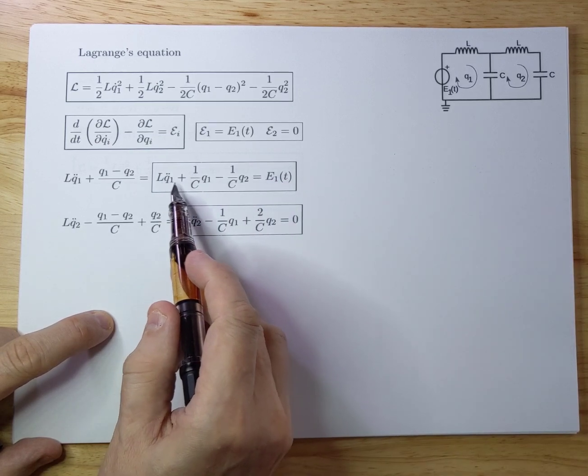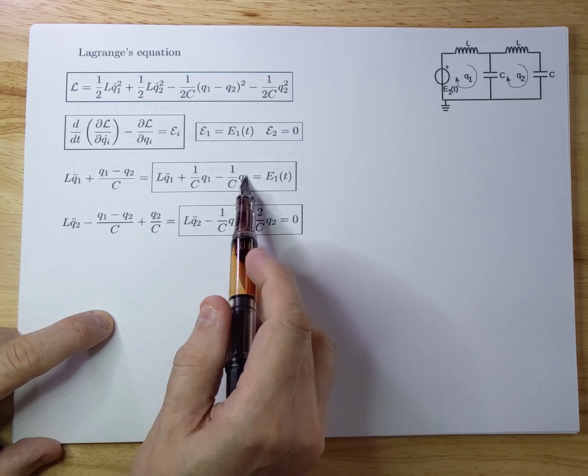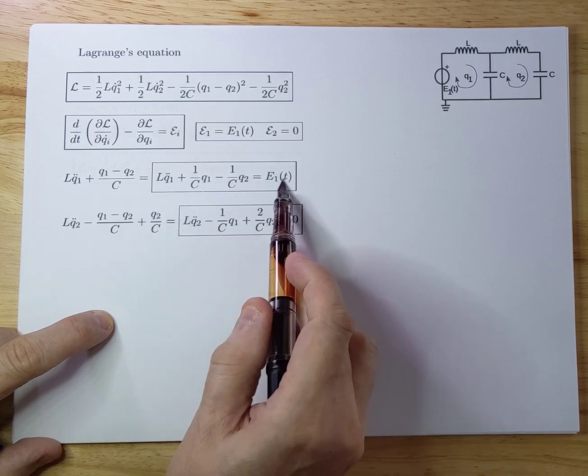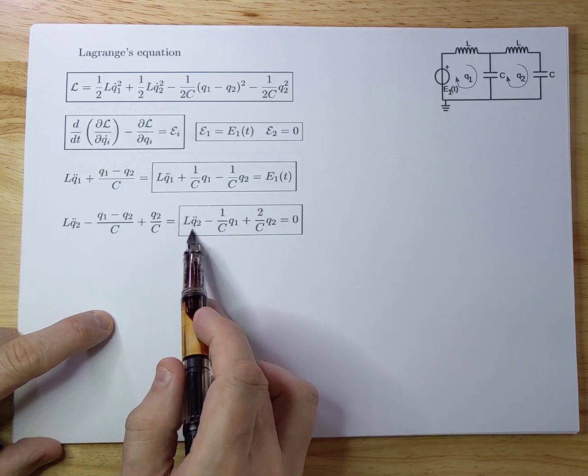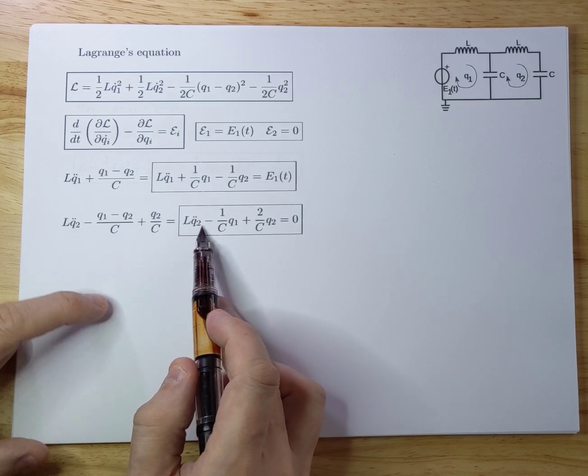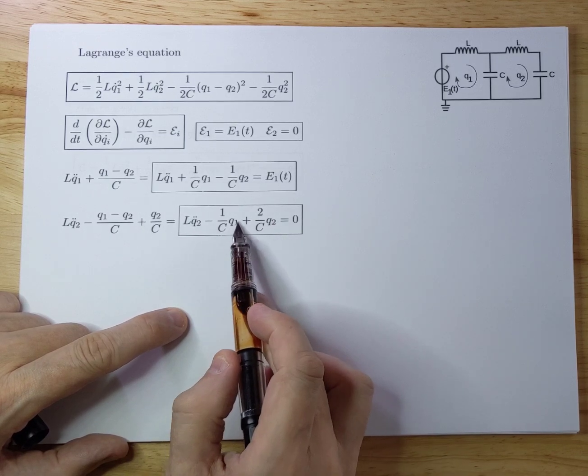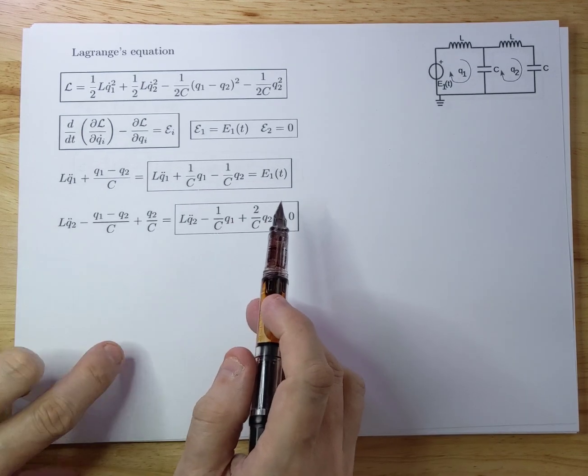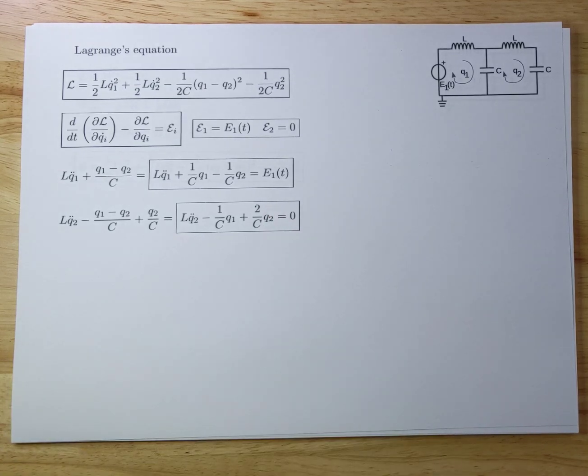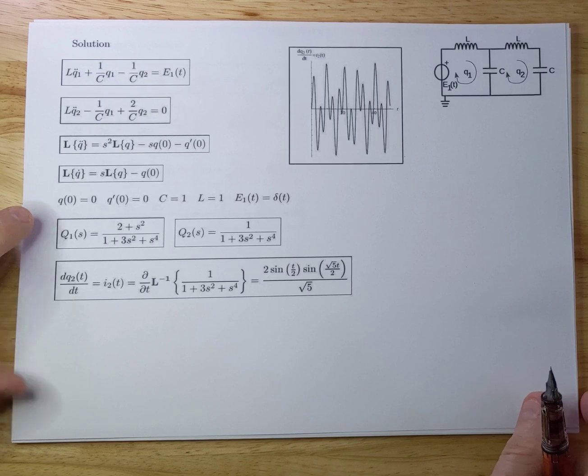And you see those are differential equations. But they depend on each other. There's a Q2 in this differential equation that also depends on Q1 and vice versa. In the Q2 differential equation here, the linear second order differential equation, there's a dependency between Q1 also here. So what I'm going to do now is I'm going to do a Laplace transform to solve these.